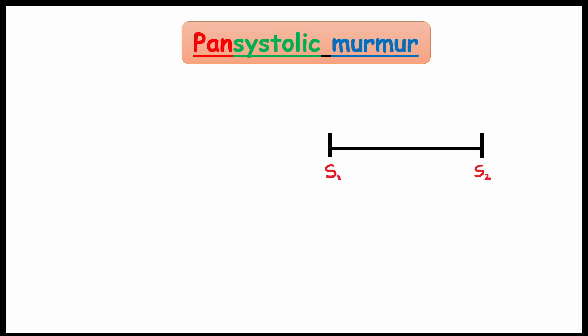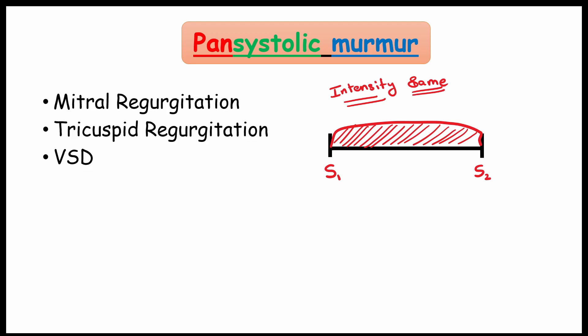Let's see pansystolic murmur. In pansystolic murmur, the intensity of the murmur is almost same. We can see this murmur in mitral and tricuspid regurgitation. Also, in ventricle septal defect.